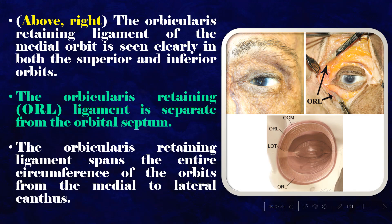The orbicularis retaining ligament spans the entire circumference of the orbits from the medial to lateral canthus.